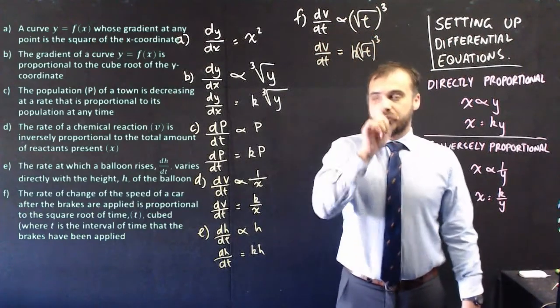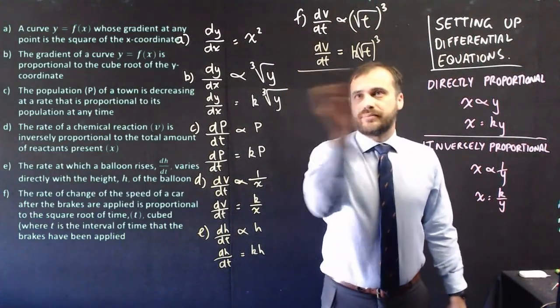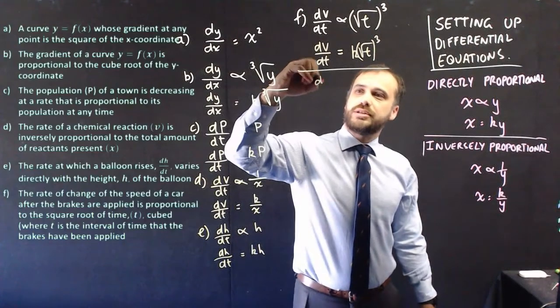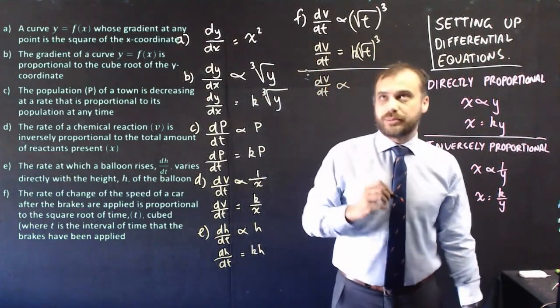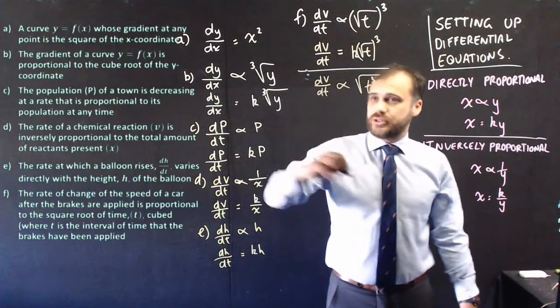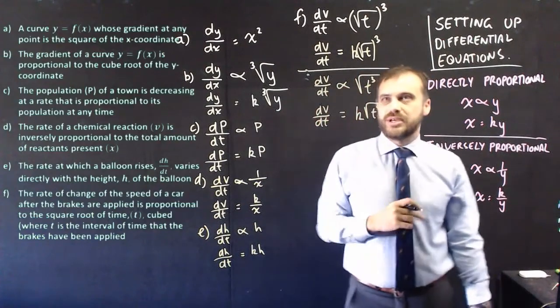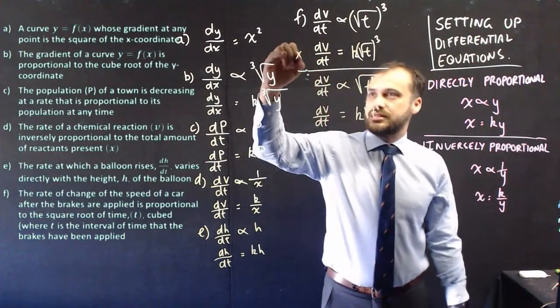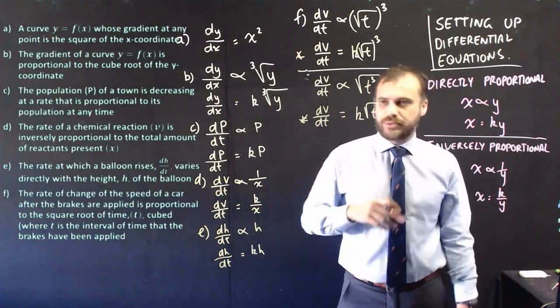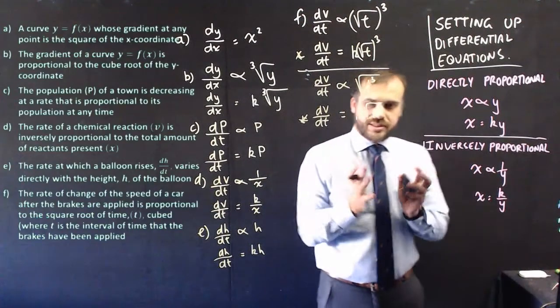All right, so that k is outside of that. Now, you might be saying to yourself, I disagree. And I think so too. The question is ambiguous. They really need to do, or maybe I need to do a better job of writing this question, because we could do an alternative. We could say that the rate of change with respect to time is directly proportional to the square root of t cubed. And if that was our interpretation, we would say that dv dt is equal to k root t cubed. Now, I think both of these answers are valid, given the way that this question has been written. So, happy with both of these answers. Someone should write that question a little bit better. All right, that is setting up differential equations.